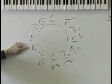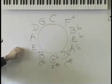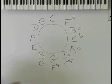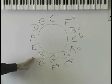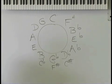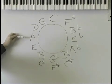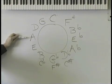Key of E, four sharps. They are F, C, G, and D. Key of B has five sharps. What are the names of the sharps? F, C, G, D, A. Cool, huh?